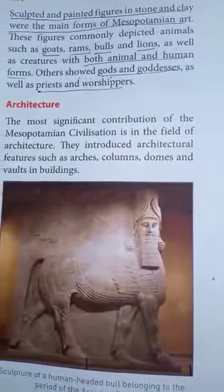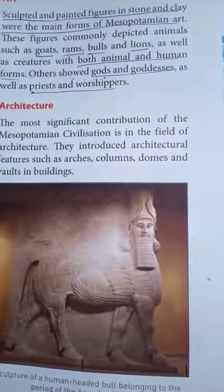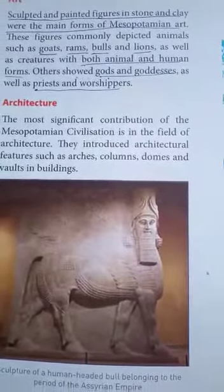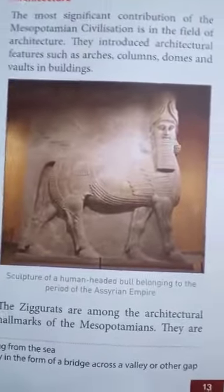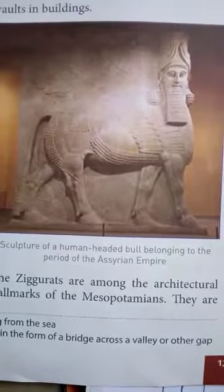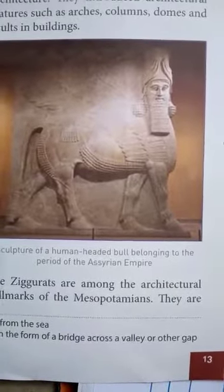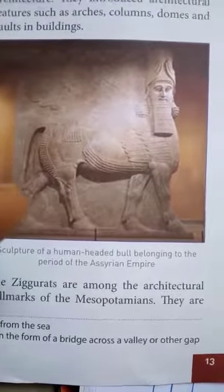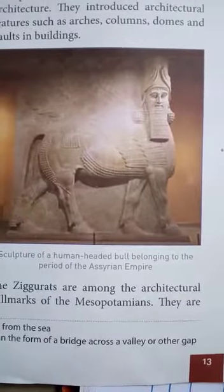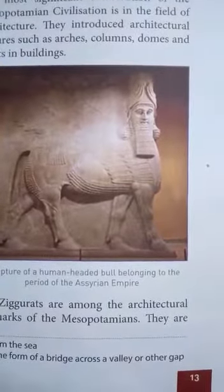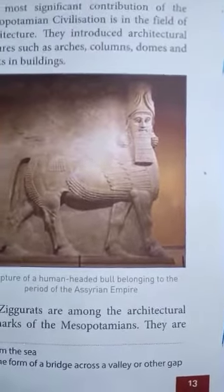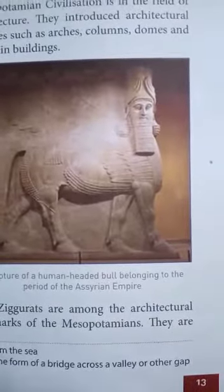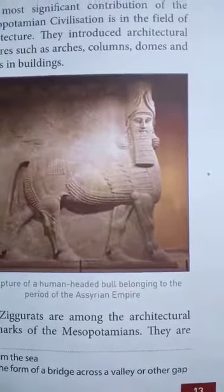By sculpting and painting figures on stones or clay, they depicted various animals such as goats, rams, bulls, lions, creatures with both human and animal form — meaning half human and half animal. You can see in this picture a sculpture of a human-headed bull belonging to the period of the Assyrian empire. They also depicted gods and goddesses, as well as priests who perform various rituals and worshippers — those who worship their gods. These are the items which are painted on clay or sculpted on stones.